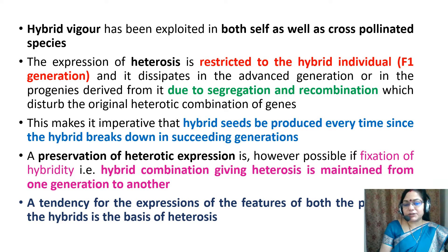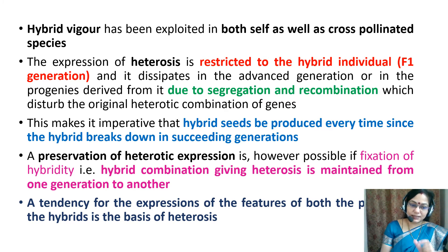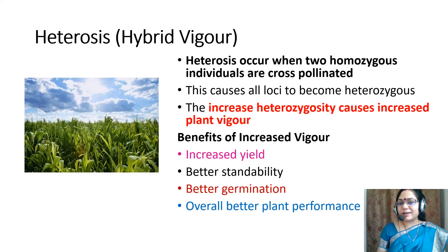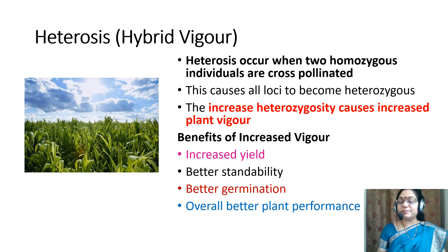Preservation of heterotic expression is possible if fixation of hybridity — that is, the hybrid combination giving heterosis — is maintained from one generation to another. The tendency for expression of features of both parents in the hybrid is the basis of heterosis. Heterosis occurs when two homozygous individuals are cross-pollinated, causing all loci to become heterozygous. The increased heterozygosity causes increased plant vigor, resulting in increased yield, better stability, better germination, and overall better performance.